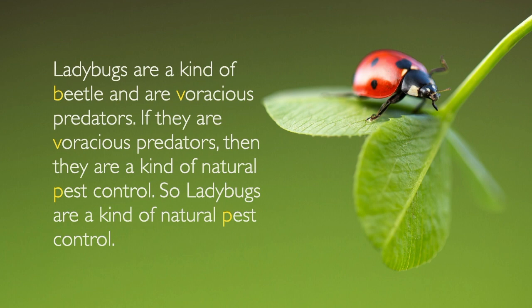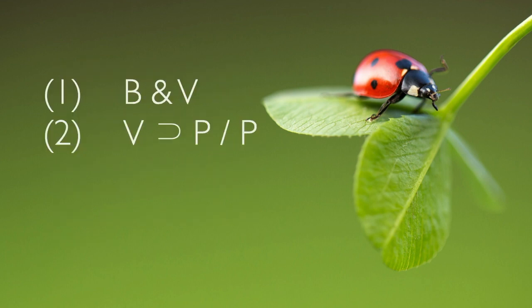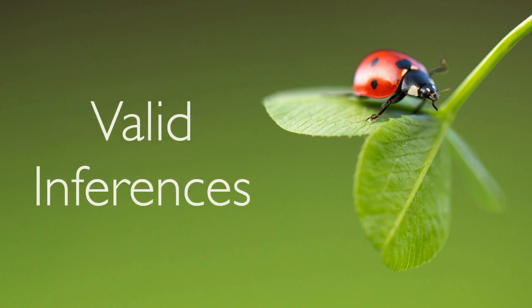We start by putting the argument in a formal language. Here are the statements symbolized. These are the premises, and this slash marks out the conclusion over here. Think of a proof as a kind of game, and this is the challenge: can we get from these premises to this conclusion using the rules of the game? And the rules, of course, are valid inferences.